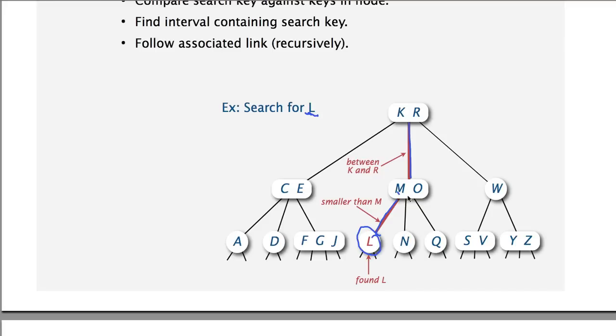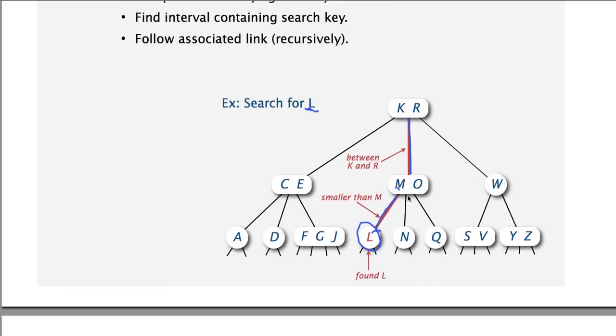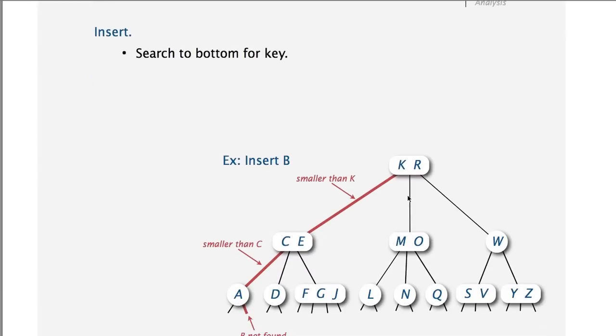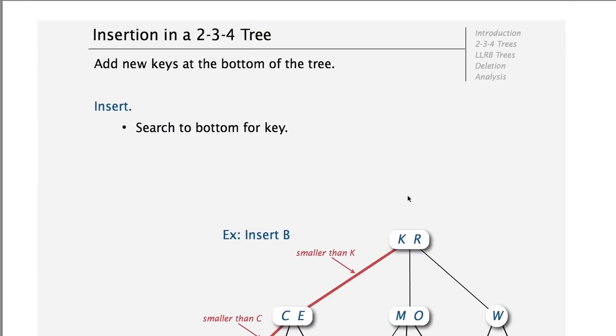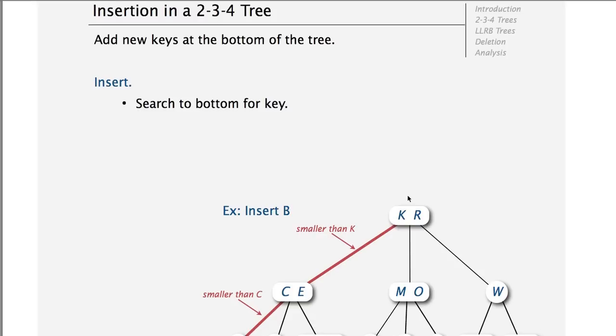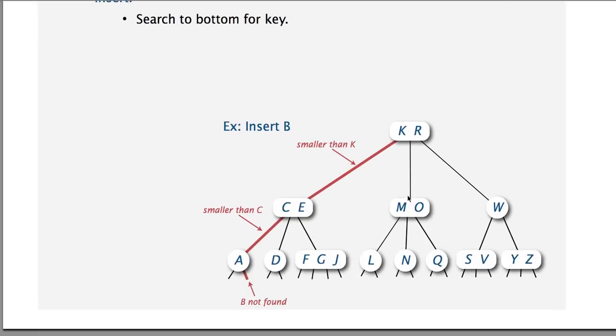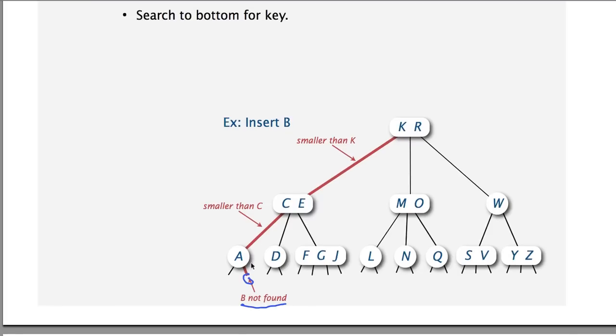But insertion is more complicated. So in insertion, we basically search for the element, see where it should be. And in this case, we are looking for B. So we're going down here, and we're finding out that there is no B here. So B is missing. And we want to add it. But we can't add it under here, because then the path won't be of equal length. So what we're going to do is simply add it into this node.